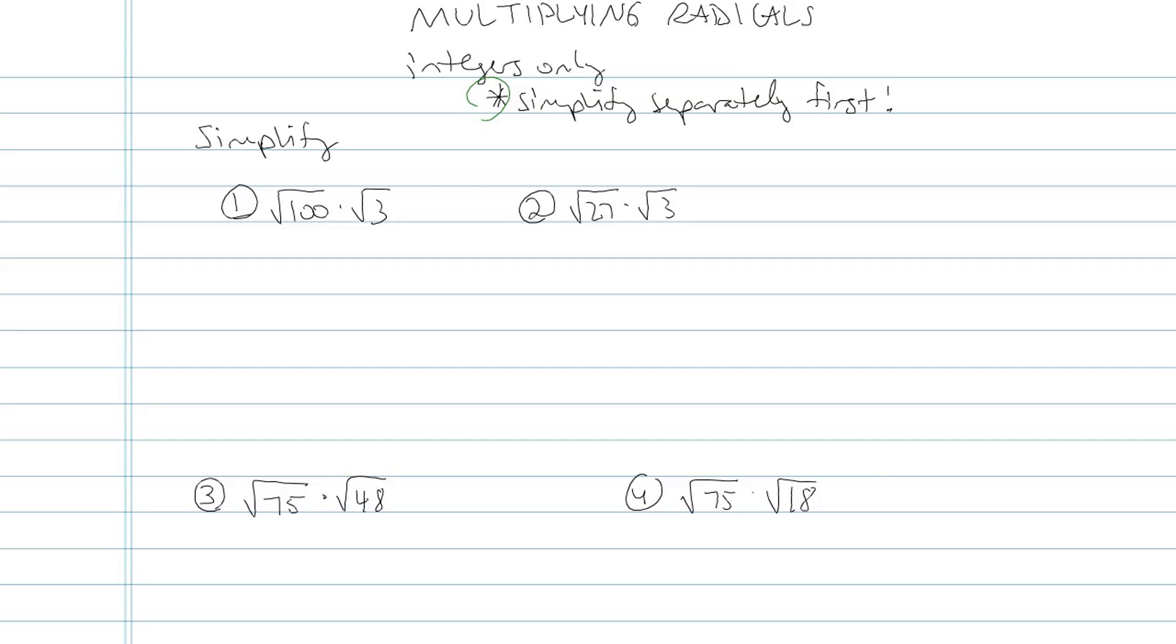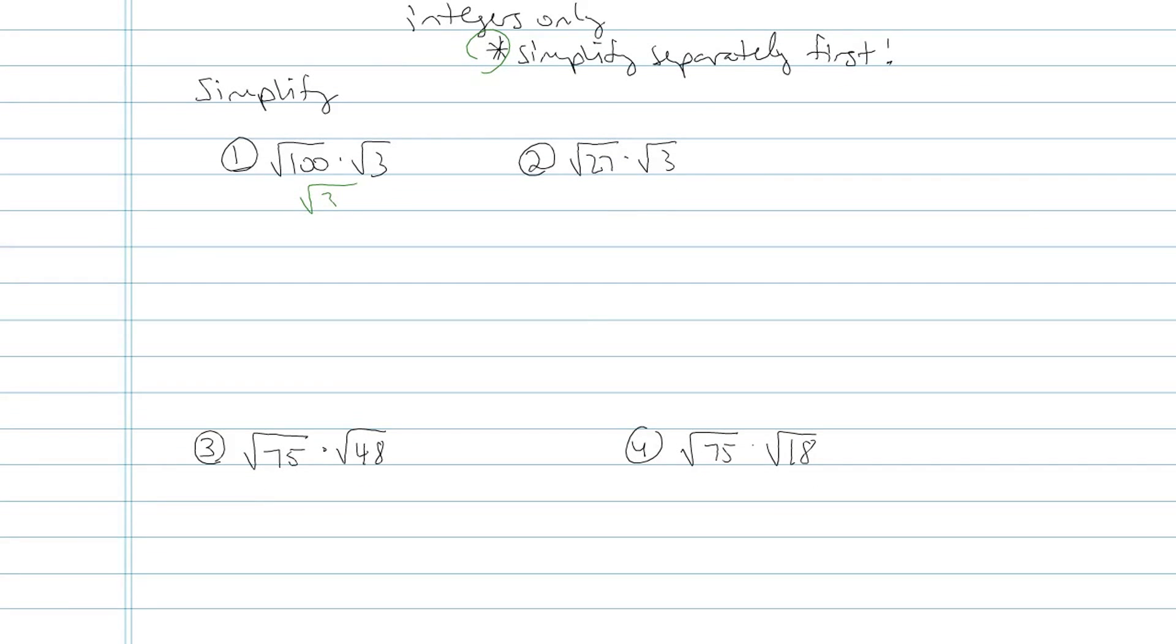Look at problem number one. Square root of 100 times square root of 3. Some people will jump right in and make that square root of 300 and then they'll try to think about how they could simplify square root of 300 and they're looking for perfect squares. They get right back to where they started from and they get kind of confused.